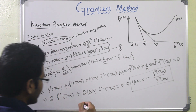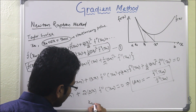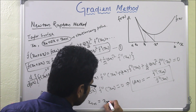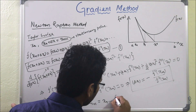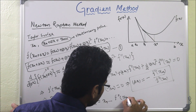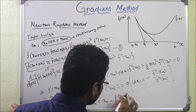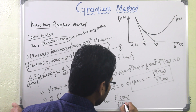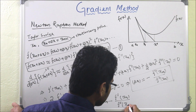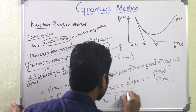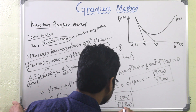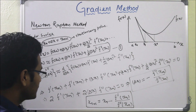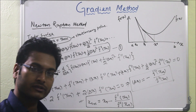So the working formula for xn+1 is: xn+1 equals xn minus f dash xn divided by f double dash xn. This is the Newton-Raphson method formula to get the minimum of the unimodal function. That's all for today.